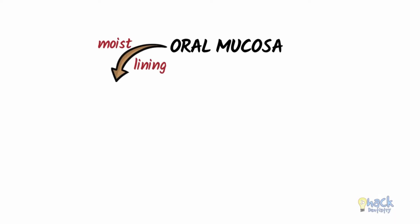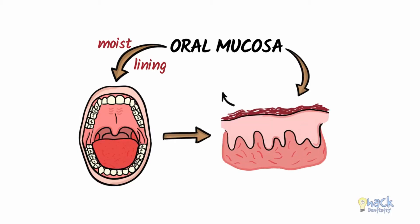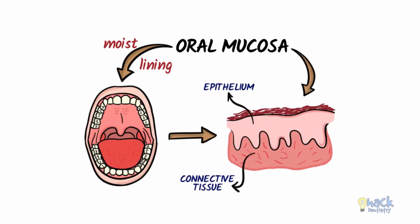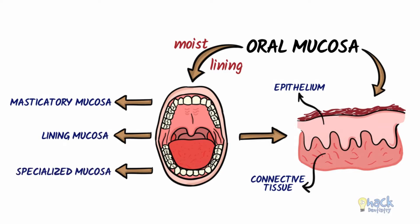The term oral mucosa or oral mucous membrane is used to describe the moist lining of the oral cavity. Oral mucosa is essentially made of an epithelium and an underlying connective tissue and is classified into three types based on its function: the masticatory mucosa, the lining mucosa, and the specialized mucosa.